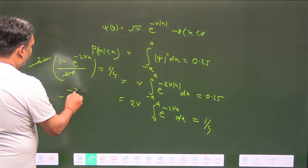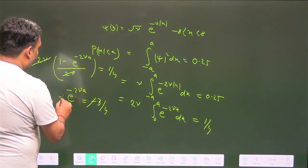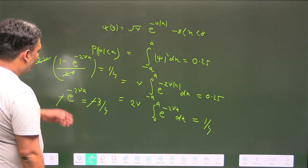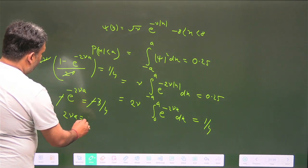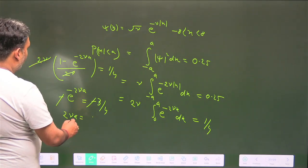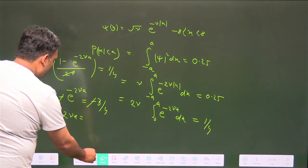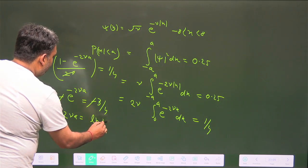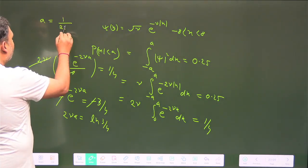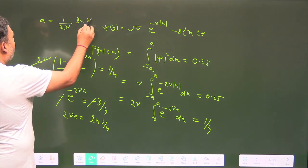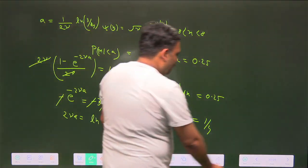Rearranging: e^(-2γa) = 3/4, so 2γa = ln(4/3). Therefore, the value of a = (1/2γ) · ln(4/3).